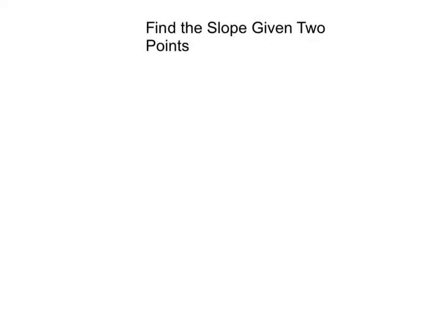Find the slope given two points. Here's our two points on number 7: (3, 5) and (3, -12).